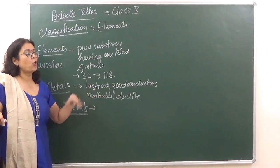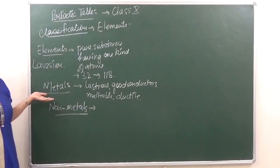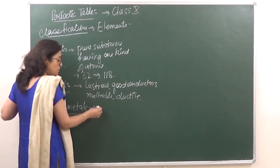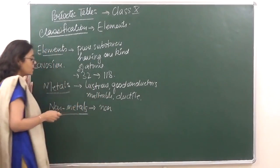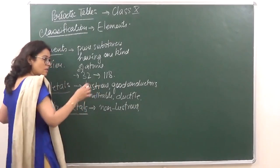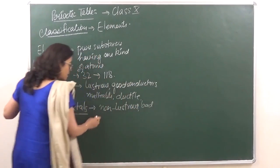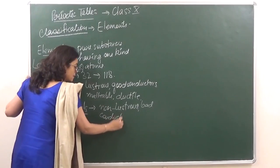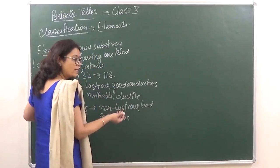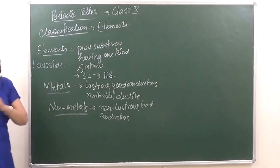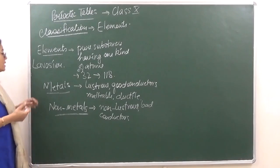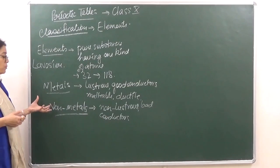All those metals showed the same kind of properties, so Lavoisier classified them as metals. Non-metals were those with opposite properties — they were non-lustrous and bad conductors, not malleable and not ductile. However, there were certain elements which did not fit into these properties; neither were they metals nor were they showing the properties of non-metals.